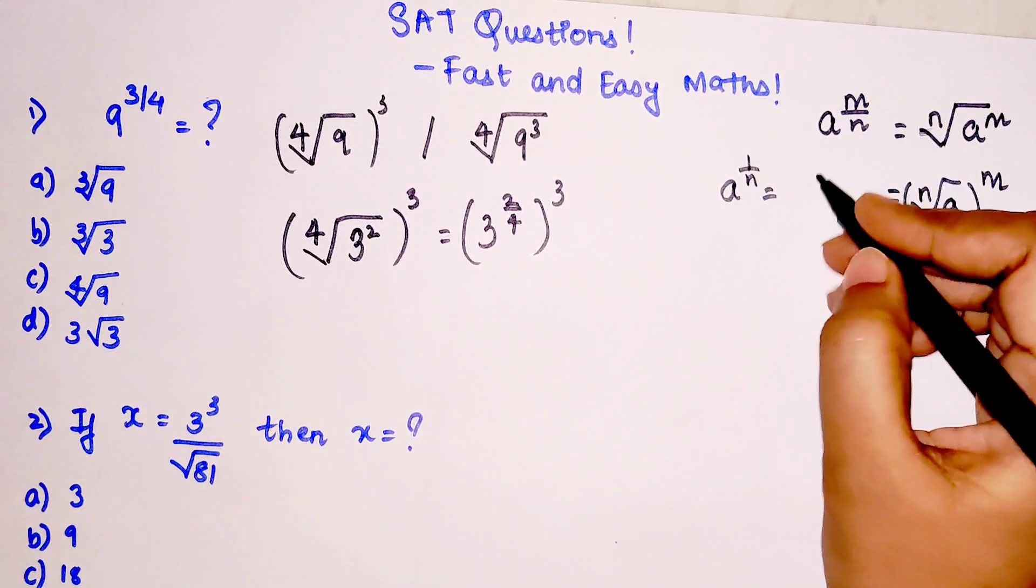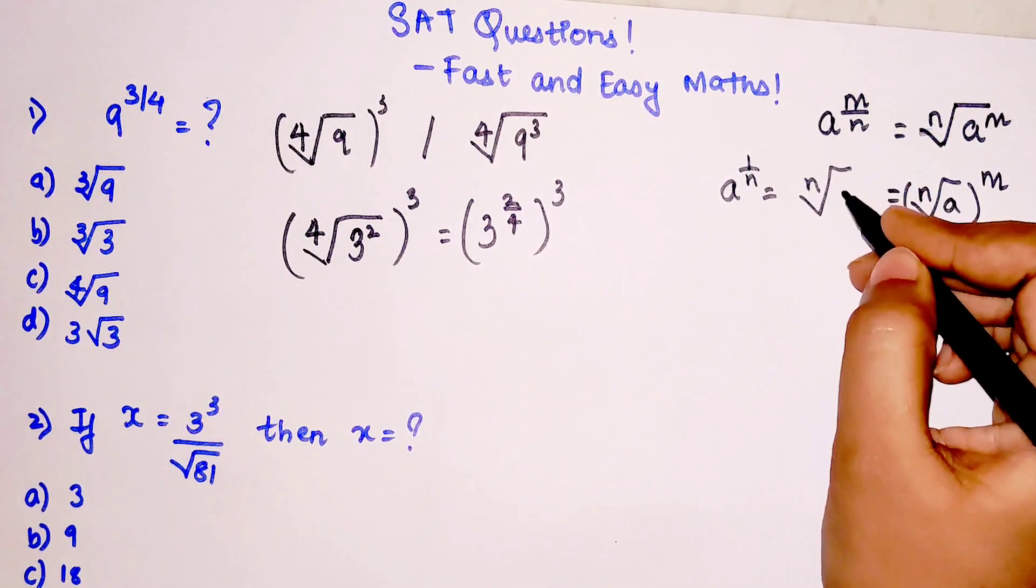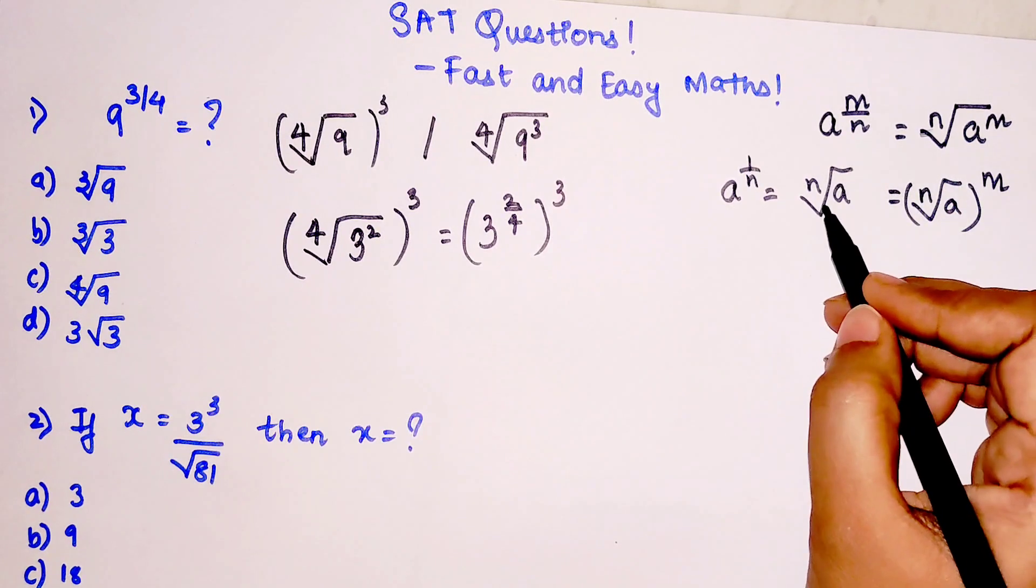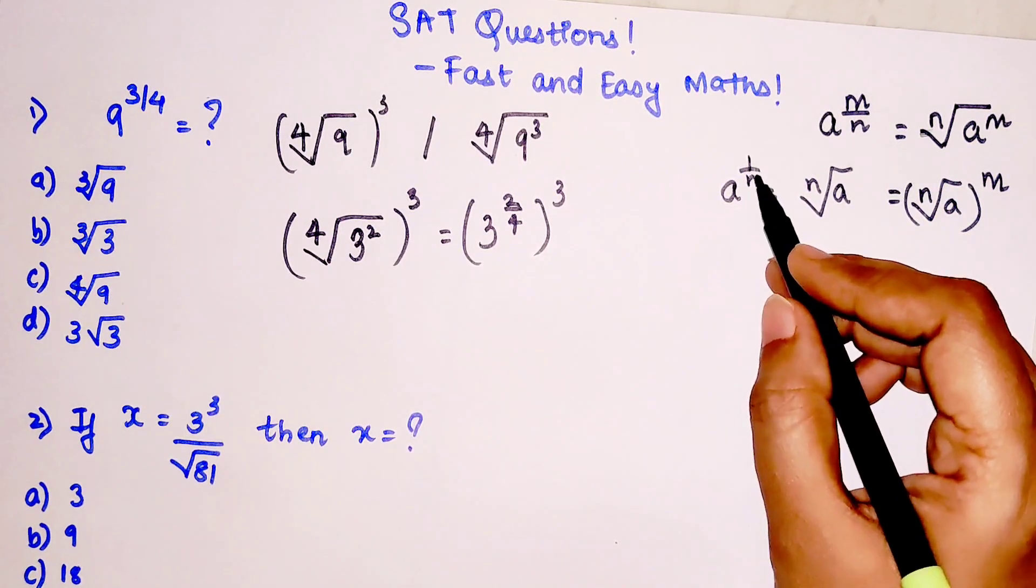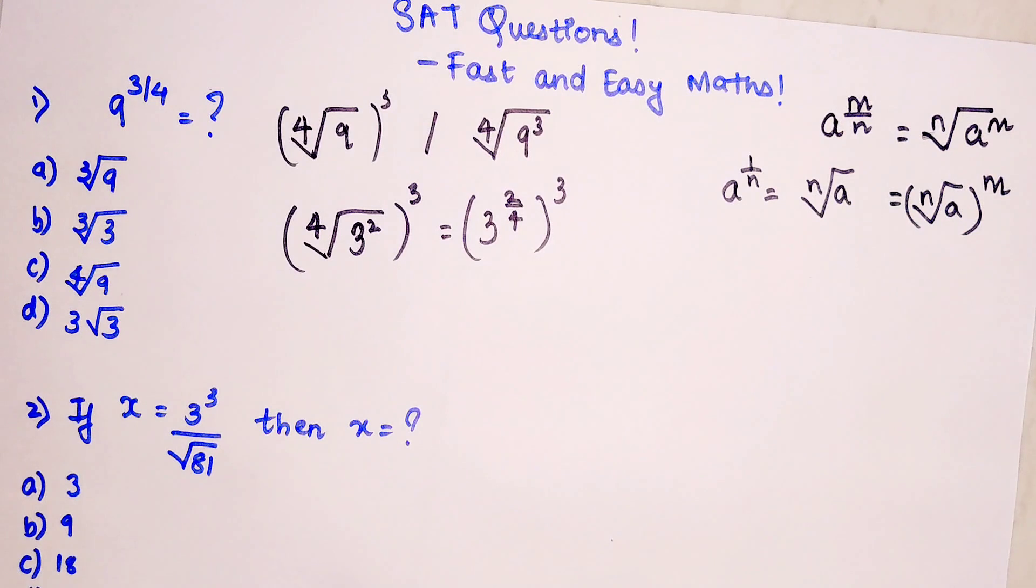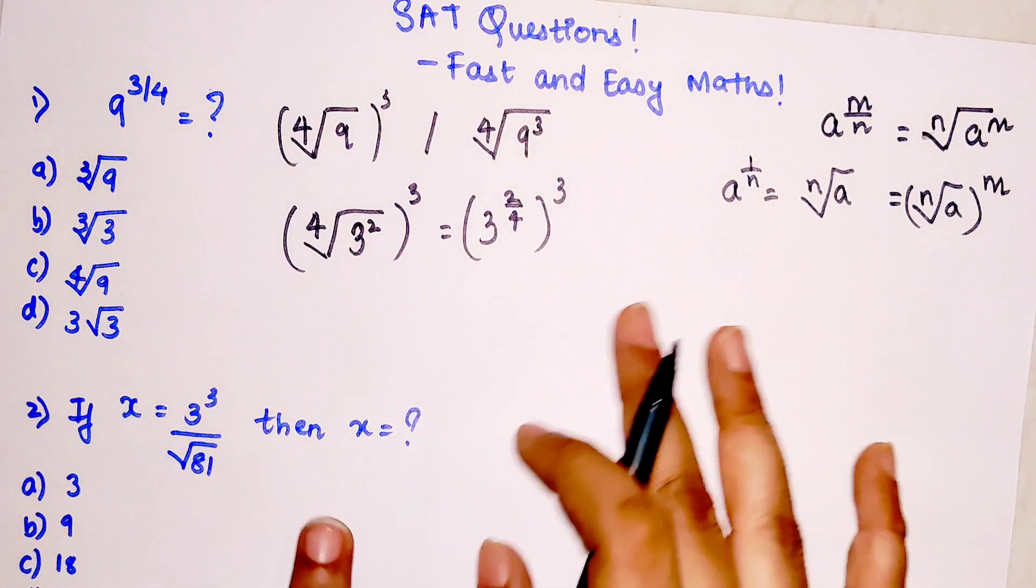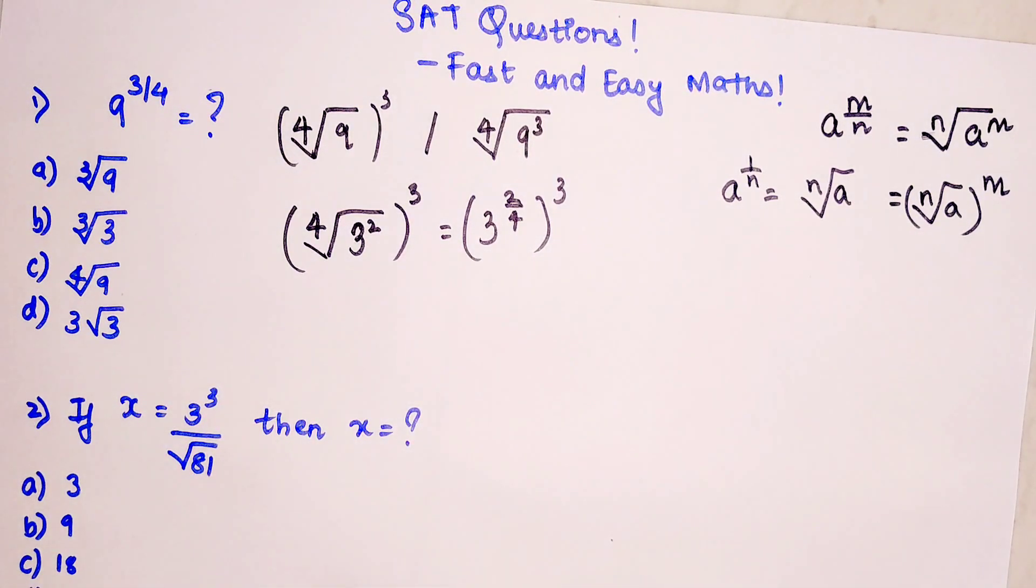I hope you've understood that if I am writing a raised to 1 upon n, it can be written as nth root of a. So similarly, nth root of a can be written as a raised to 1 upon n. Vice versa.